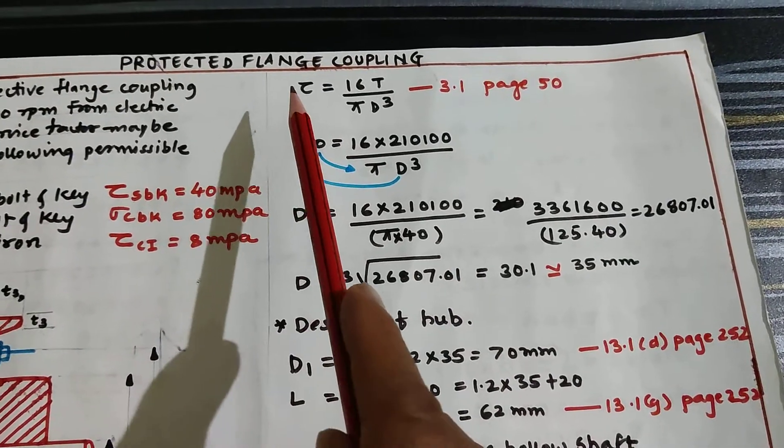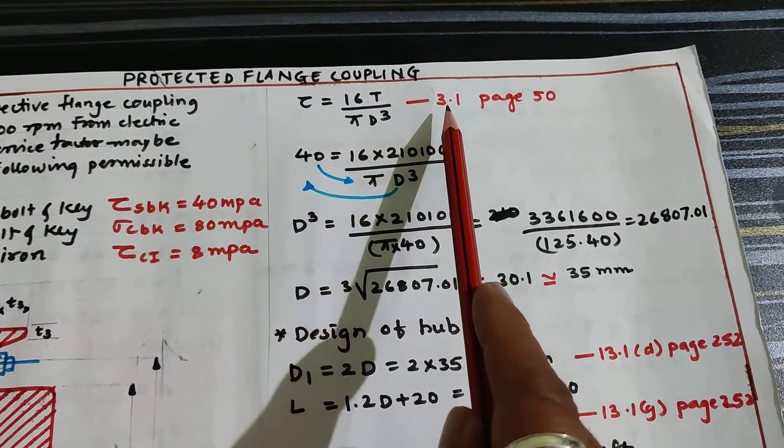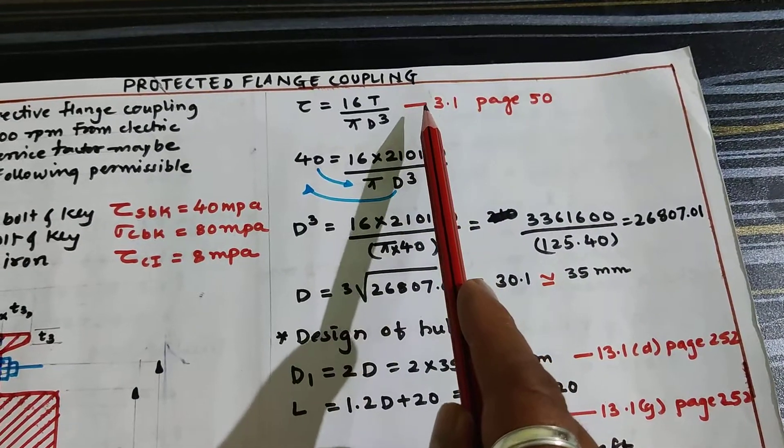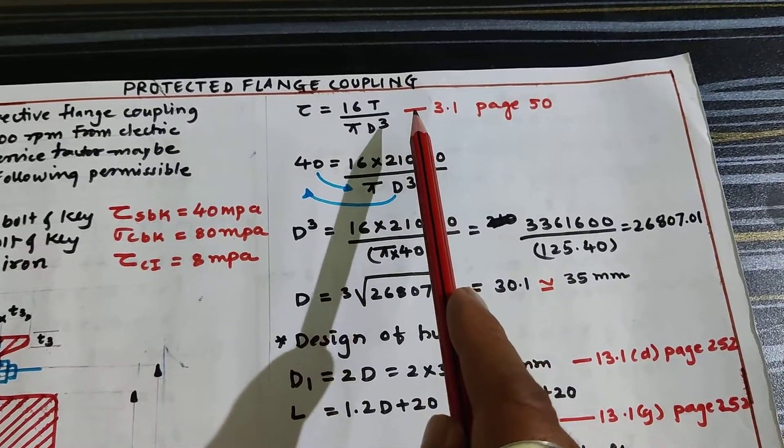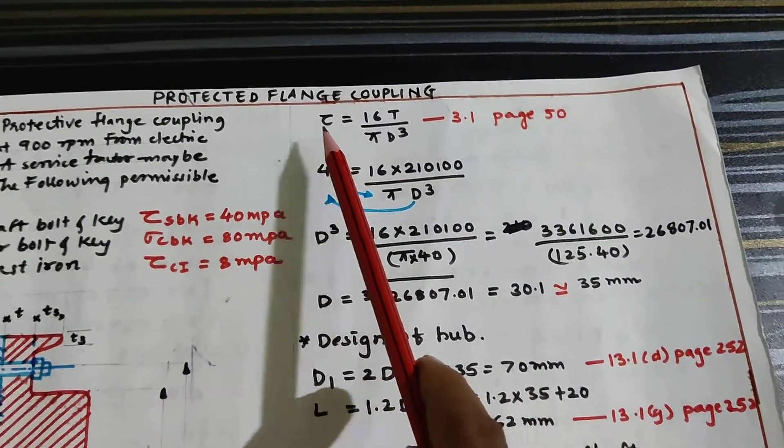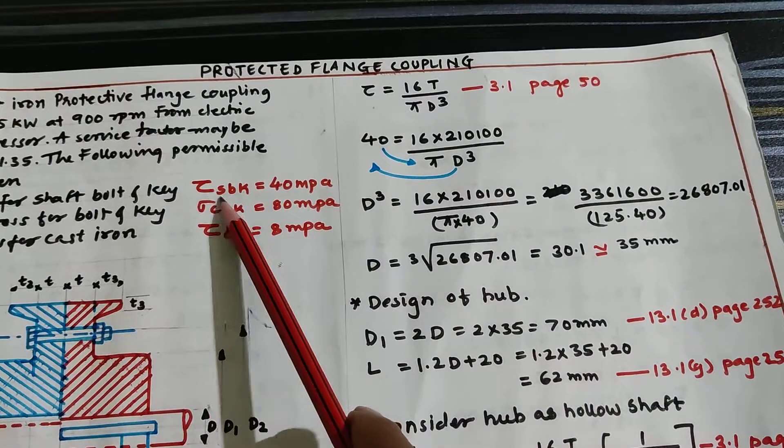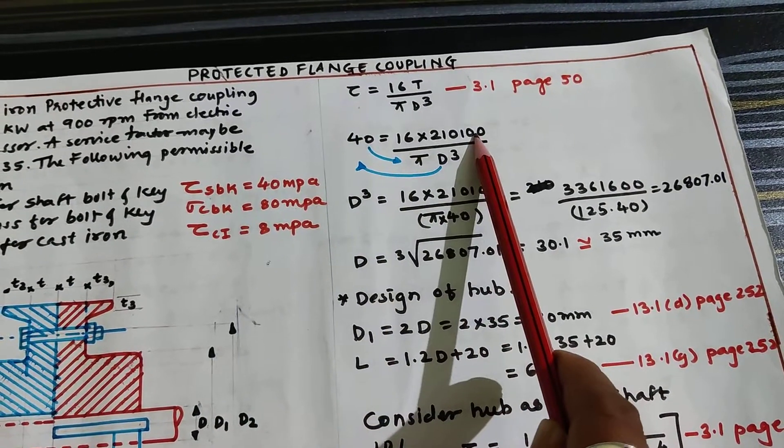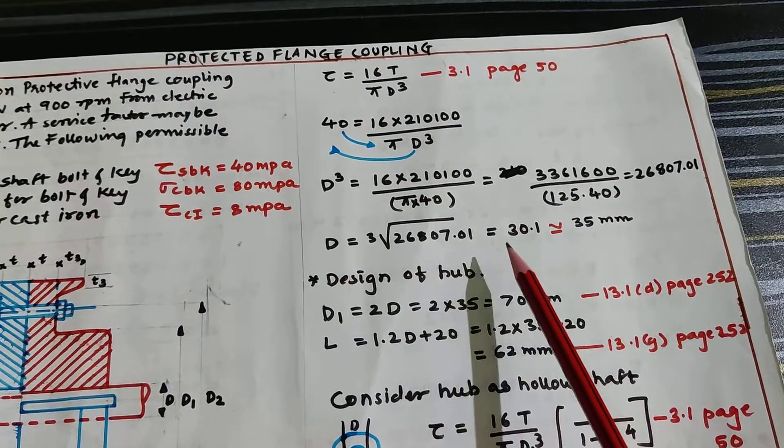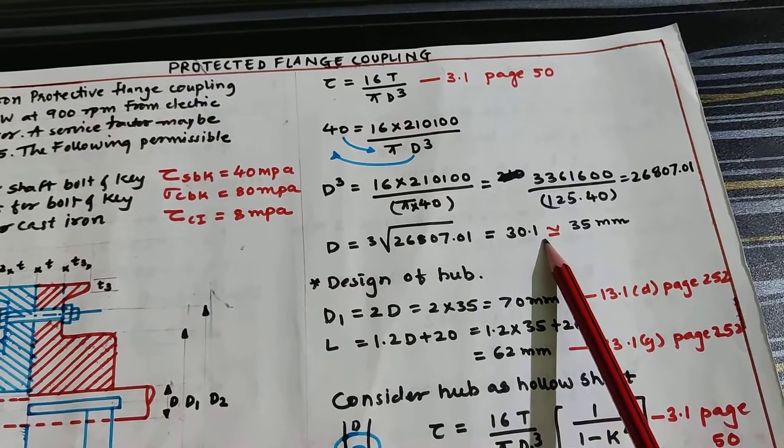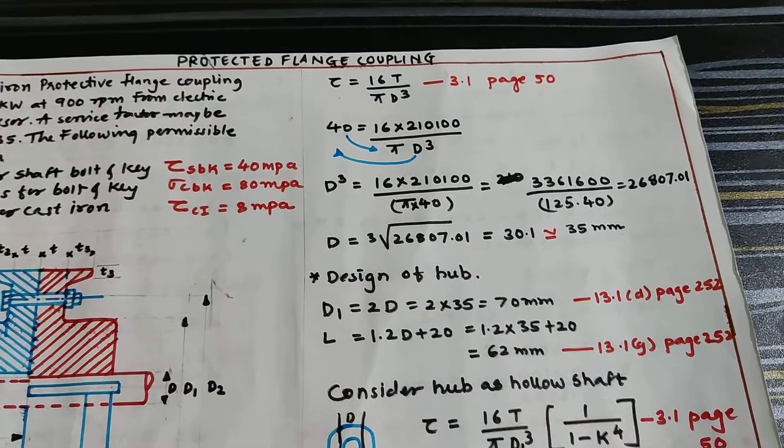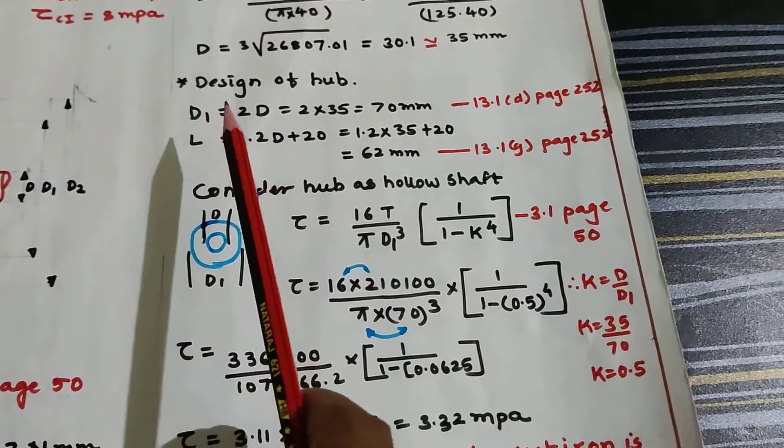Next formula: tau is equal to 16T / π D³. This formula is from page number 50, equation number 3.1. I am using Bhandari and K Mahadevan design data handbook. Substitute the values: tau value for shaft is 40, and the torque we calculated. After substituting and calculating, we got 30.1. I am rounding it off and taking diameter as 35 mm.